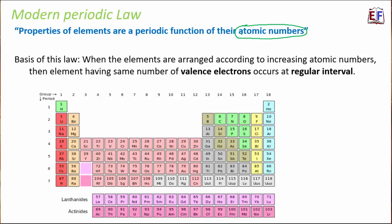When elements are arranged by increasing atomic numbers, we see that elements having the same number of valence electrons occur at regular intervals. The number of valence electrons plays a critical role in deciding the properties of elements, which is why we observe periodicity in properties. The modern periodic table has 18 vertical columns called groups and 7 horizontal rows called periods.